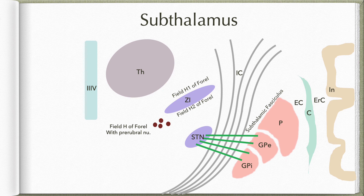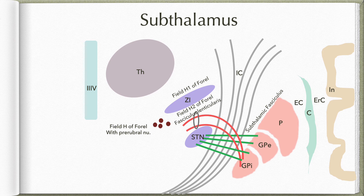The second set of fibers begins from the globus pallidus internum. These fibers pass through the internal capsule, then travel on the dorsal aspect of the subthalamic nucleus, passing through field H2 of Forel. This fiber bundle is known as the fasciculus lenticularis. These fibers then pass through field H of Forel to reach field H1 of Forel.